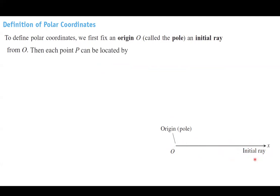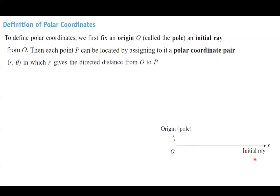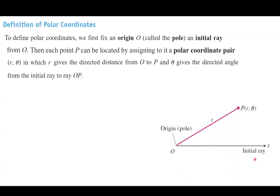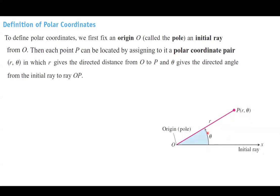Then each point P can be located by assigning to it a polar coordinate pair, which we denote by R and theta. R is the directed distance from O to P, and theta gives the directed angle. So basically, you have O, the origin or the pole, and a point denoted by R and theta, where R is the directed distance between O and P, and theta is the angle from the positive x-axis to P, measured counterclockwise.